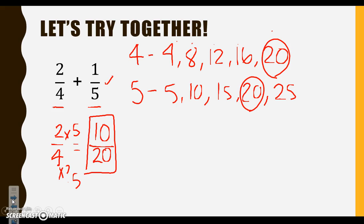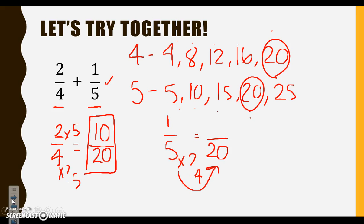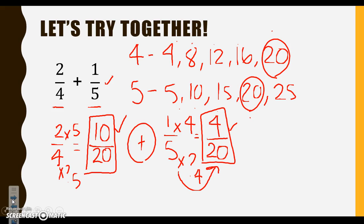We've got to now convert 1 fifth. We know we want it to become a fraction with a denominator of 20. We say 5 times what gives me 20 — the basic math fact is 5 times 4 equals 20, or count: 1, 2, 3, 4. Whatever I do to the bottom, I must do to the top. 1 times 4 is 4 — we have 4 over 20. Remember we're not finished because we have to add them together. Our denominator stays the same, so we bring over 20 and add 4 plus 10 — that's 14.